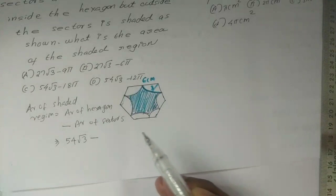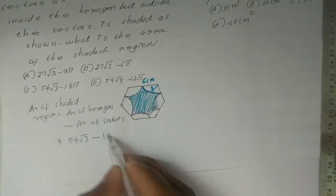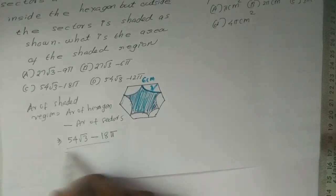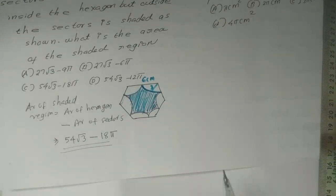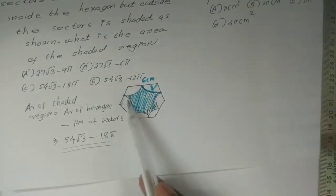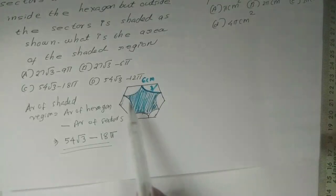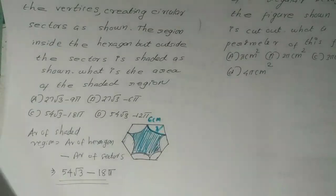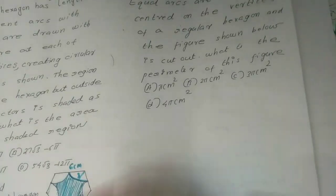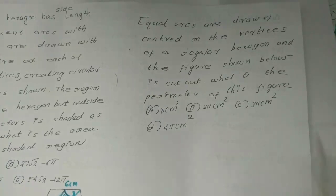The answer: 54 root 3 minus 18 pi. And the figure shown below is cut out, what is the